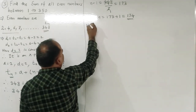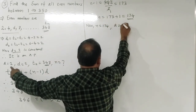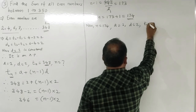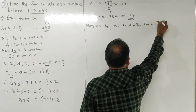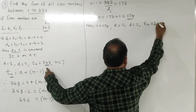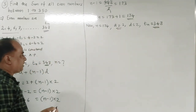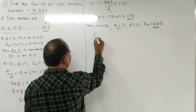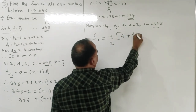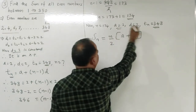Now n = 174, a = 2, d = 2, and last term Tn = 348. Since both first and last terms are given, we use the alternate formula Sn = n/2 × (a + Tn).